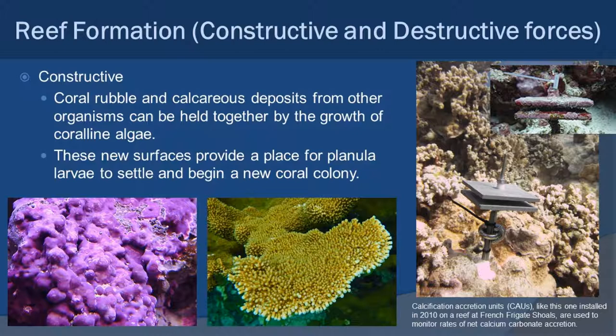But with destruction comes construction. A storm comes through and fragments all these corals, leaving rubble on the bottom. Then you have actual calcareous organisms, specifically things like coralline algae — in the bottom left picture you'll see that bright pink stuff covering rocks. Various types of calcareous algae will fuse all these broken pieces of rock and coral together to create larger structures. That is where small planktonic planula larvae from other corals will settle and start to grow on that rock base, becoming a new coral formation and continuing to build up the coral reef itself.